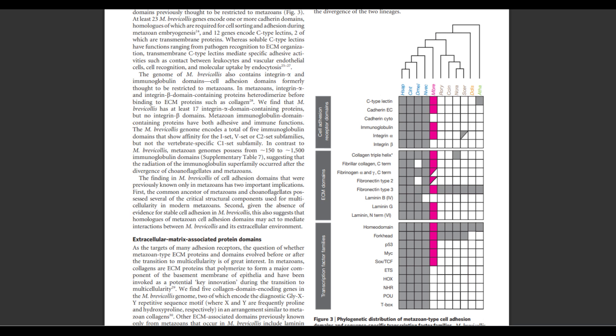Another observation of the King et al. study was that choanoflagellates possess many of the genetic domains that animals have: cell adhesion receptor domains like C-type lectin, cadherin, immunoglobulin, and integrin alpha; extracellular matrix domains like collagen triple helix domain, fibronectin type III, and laminin G; and transcription factor families like p53, MYC, and SOX-TCF. Four KEDBOX proteins are shared among opisthokonts — animals, choanoflagellates, filastereans, ichthyosporeans, and fungi — and homeodomains are shared among all eukaryotes. What the possession of all these genes for cell adhesion and extracellular matrices implies is that animals didn't have to invent a repertoire of new genes for multicellularity to emerge. Instead, they merely had to co-opt existing genes for new functions.